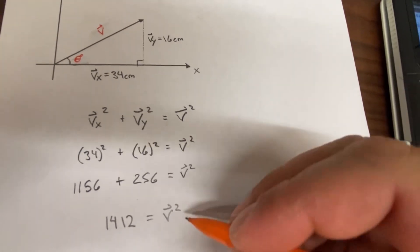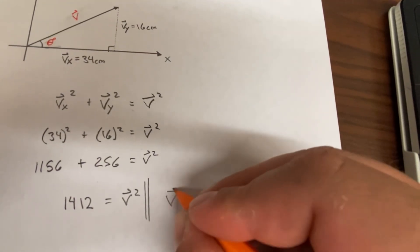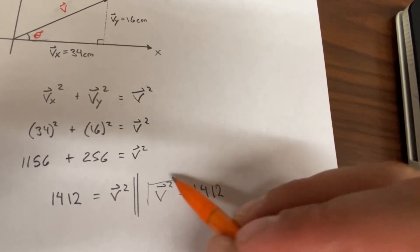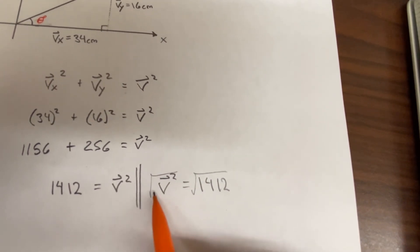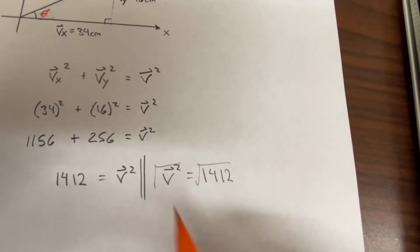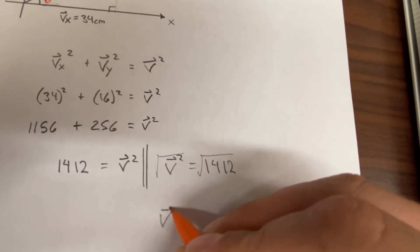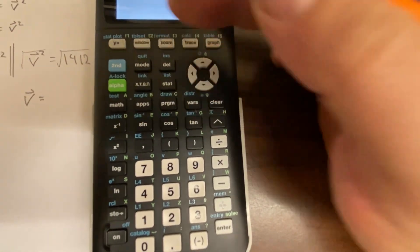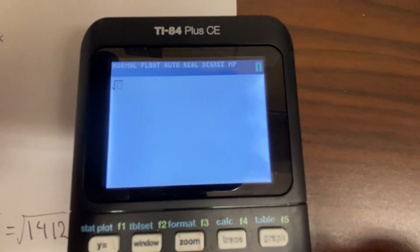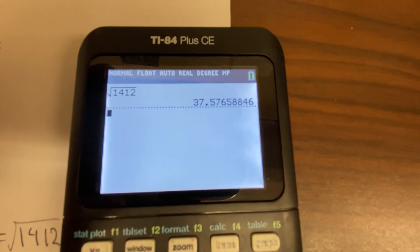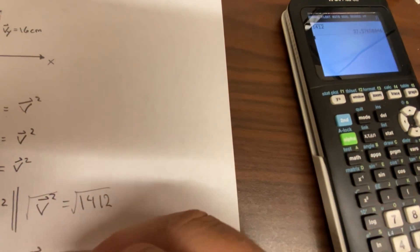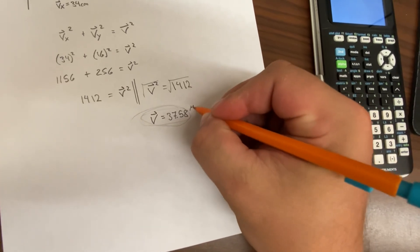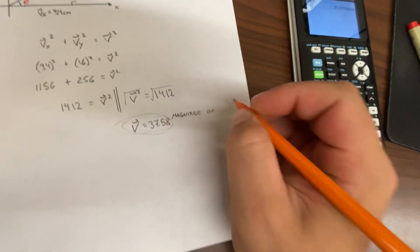To solve for vector V, take the square root of both sides. The square root of V squared is just V, and V equals the square root of 1412. On the calculator, press Second then the square root key and enter 1412. That gives 37.58. So the magnitude of vector V is 37.58.